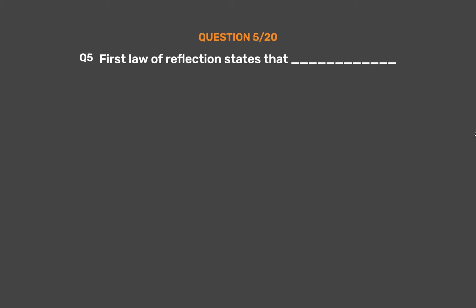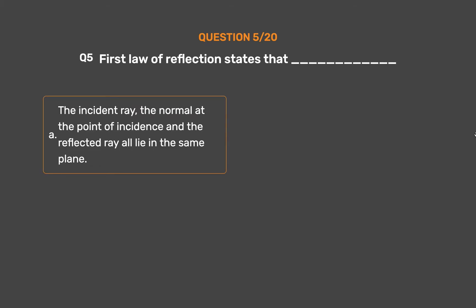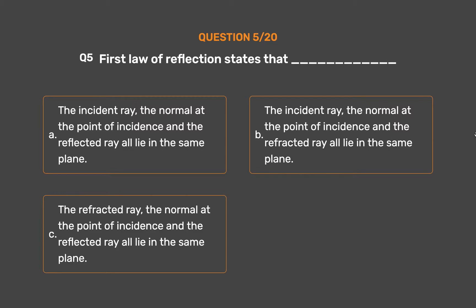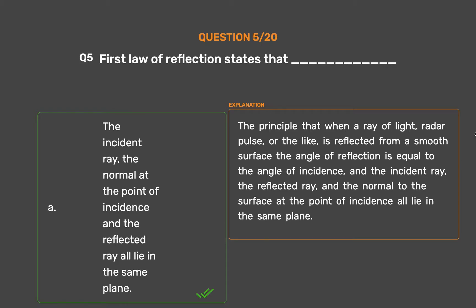Question number 5: The first law of reflection states that — Option A: The incident ray, the normal at the point of incidence, and the reflected ray all lie in the same plane. Option B: The incident ray, the normal at the point of incidence, and the refracted ray all lie in the same plane. Option C: The refracted ray, the normal at the point of incidence, and the reflected ray all lie in the same plane. Option D: None of these. The correct answer is Option A. The principle states that when a ray of light is reflected from a smooth surface, the angle of reflection equals the angle of incidence, and the incident ray, the reflected ray, and the normal to the surface at the point of incidence all lie in the same plane.